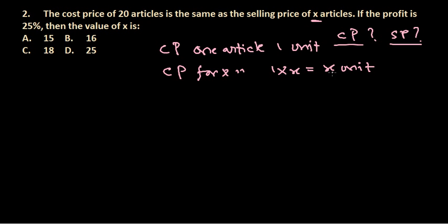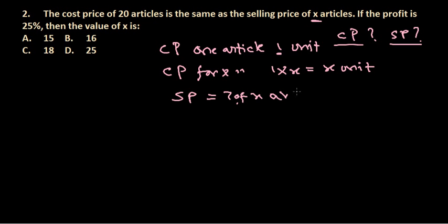Now, the problem says the cost price of 20 articles is the same as the selling price of X articles. If each article costs 1 unit, the cost price of 20 articles is 20 units. Therefore, the selling price of X articles is 20 units — let's write that as 20 rupees.